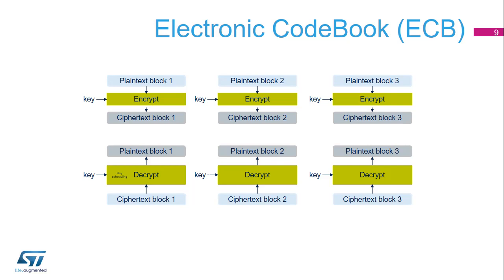ECB is the simplest form of operation. There are no chaining operations and no special initialization stage. The message is divided into blocks and each block is encrypted or decrypted separately. For an ECB decryption, a key for the first round of decryption must be derived from the key of the last round of encryption. This is why a complete key schedule of encryption is required before performing the decryption.